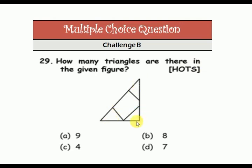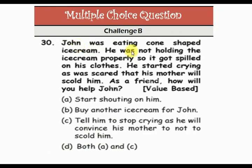John was eating a cone-shaped ice cream. He was not holding the ice cream properly, so it got spilled on his clothes. He started crying, scared that his mother would scold him. As a friend, how will you help John? Option A: buy another ice cream for John.